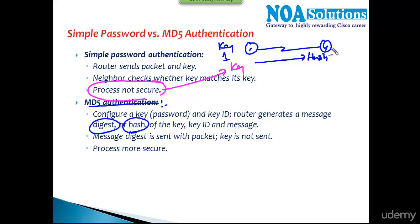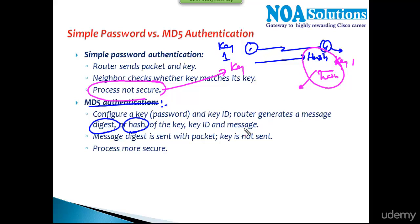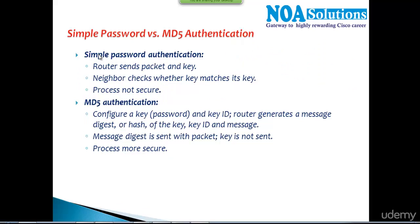The neighbor router also generates the same hash value based on its own key and password. Once the hash values match on both sides, it confirms that the key number and key string are matching, which means authentication is successful. The advantage of MD5 authentication is that it is a much more secure way of authentication compared to simple text authentication.